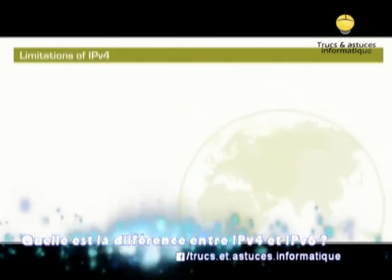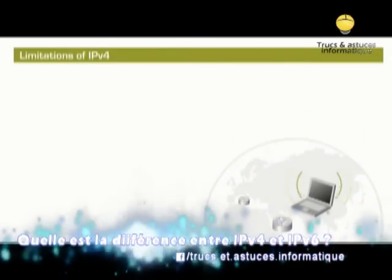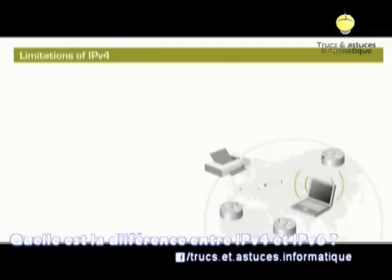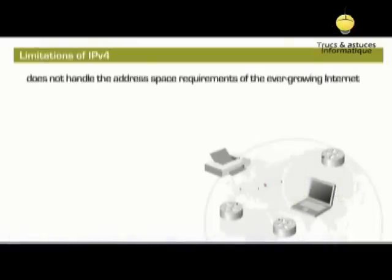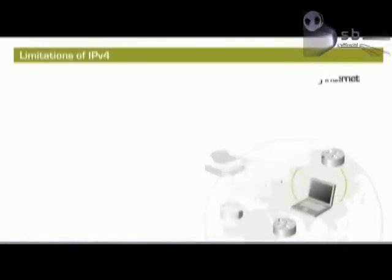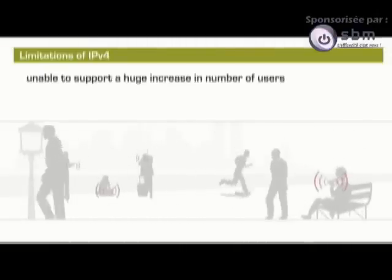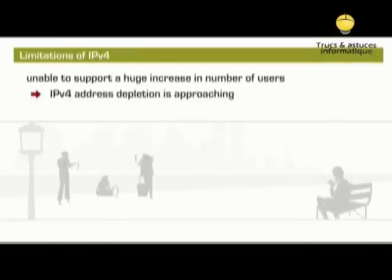IPv4 has stood the test of scaling an internetwork to a global utility the size of the Internet today, but IPv4 wasn't initially designed to support a high number of network equipment. Because of the recent exponential growth of the Internet, IPv4 is unable to satisfy the potential huge increase in the number of users or the geographical needs of the Internet expansion. As a result, IPv4 address depletion is approaching quickly.